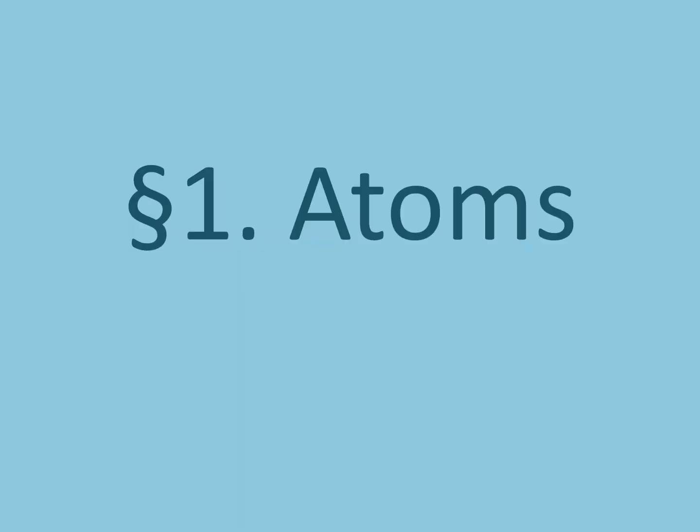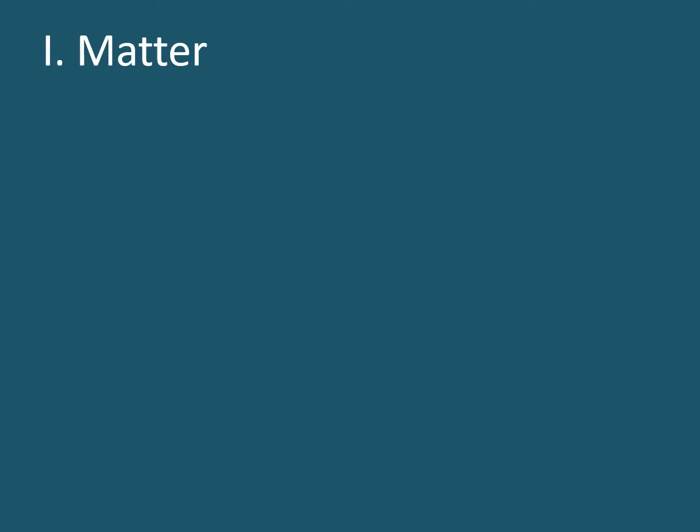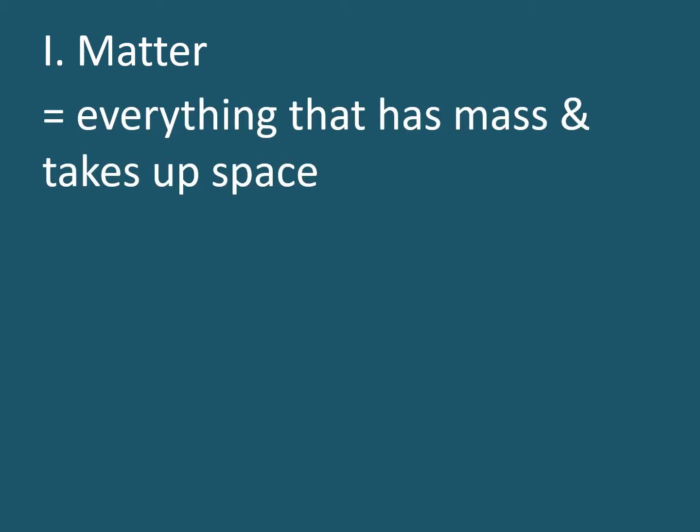Section 1, the atoms. Organisms are made up of matter, so let's begin by describing what is matter. Matter is everything that has mass and takes up space. Mass you can think of as giving objects weight. If an object is in a gravitational field like on the earth, then gravity will be exerted on it and it will have weight.